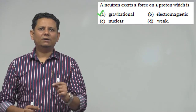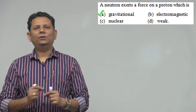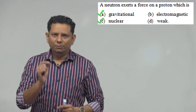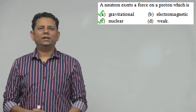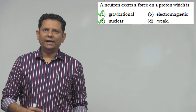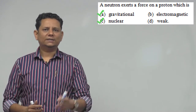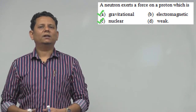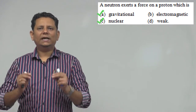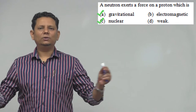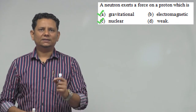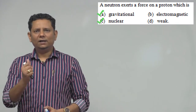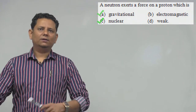So here is our option: gravitational and nuclear force. Because you have a neutron with a charge of 0, electromagnetic force will not be able to act. Weak forces — for example, you have van der Waals force — they are between molecules, not between these elements. So here is your answer A or C: gravitational and nuclear will be the right answer.